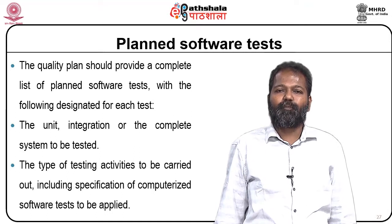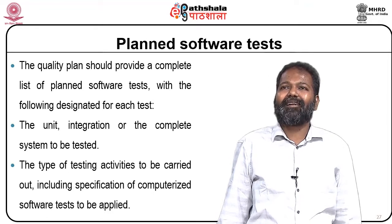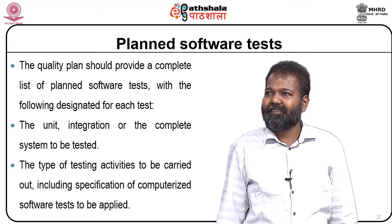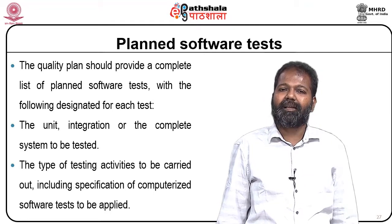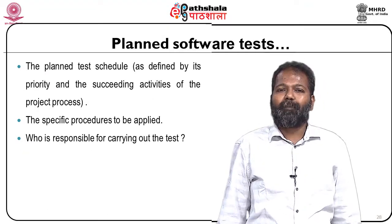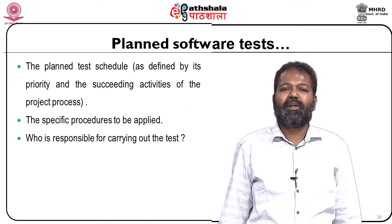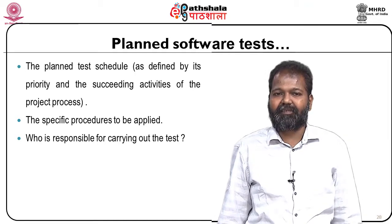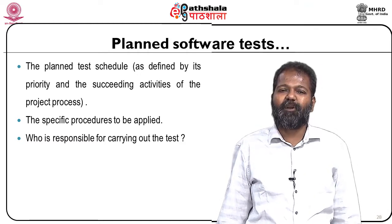The quality plan should provide a complete list of planned software tests with the following designated for each test: the unit, integration, or complete system to be tested; the type of testing activities to be carried out, including specification of computerized software tests to be applied; the planned test schedule as defined by priority and succeeding project activities, prepared well in advance; and the specific procedures to be applied and who is responsible for carrying out the test.